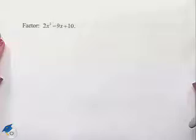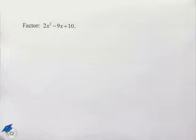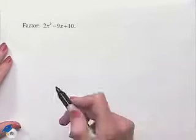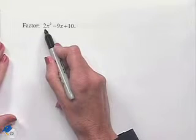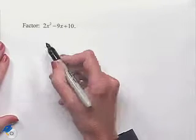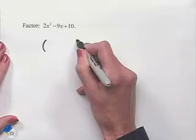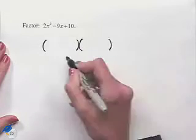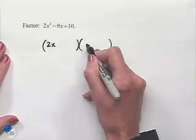For our next problem, we're going to factor 2x squared minus 9x plus 10. We start by noticing that our leading coefficient is equal to 2. That tells us we can factor that first term into 2x times x.